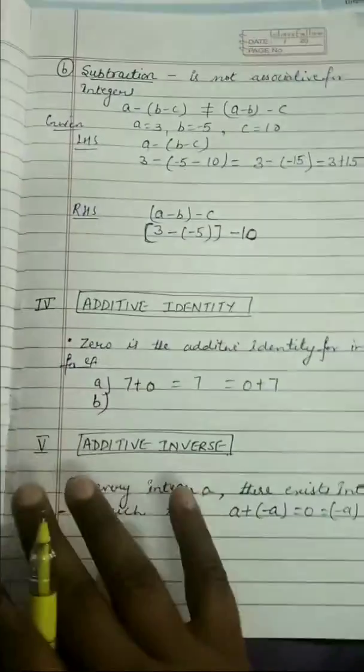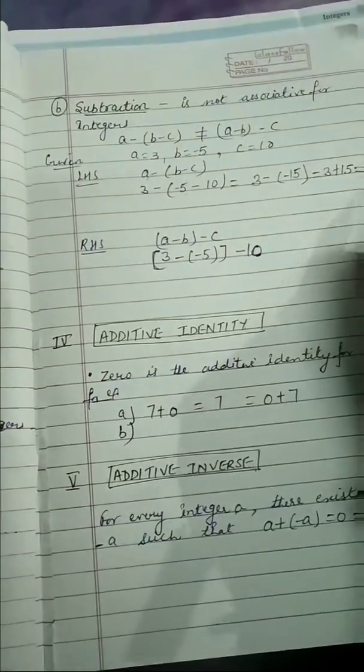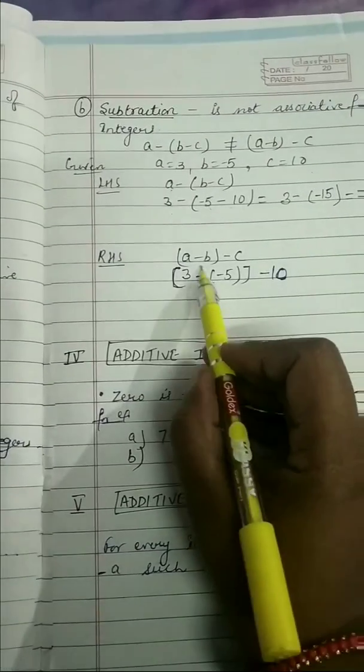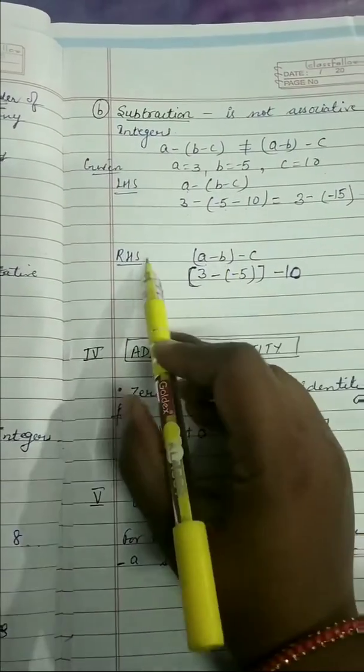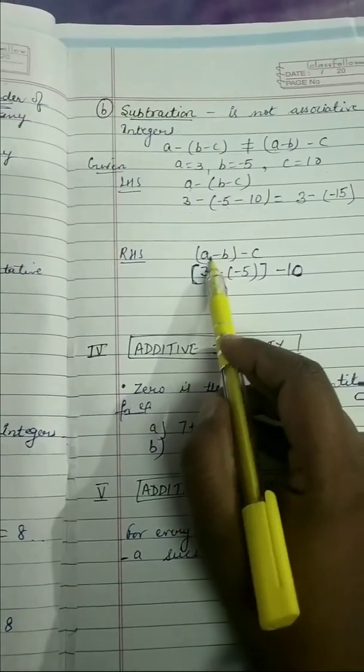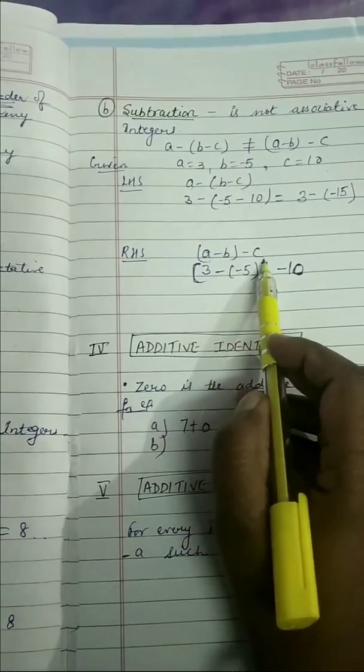You've already done the basics of this chapter in previous class. Now for the right-hand side, (A minus B) minus C.